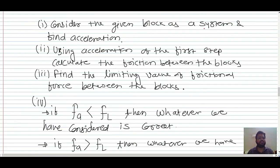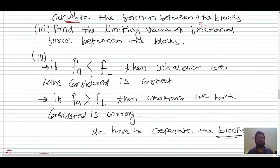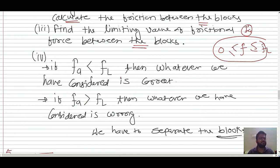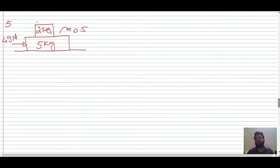For block-on-block systems, follow these steps: First, consider all blocks as a single system and find the acceleration. Second, calculate the friction force using that acceleration. Third, find the limiting value of frictional force between the blocks. If the calculated friction exceeds the limiting value, the blocks move separately; if it is within the limit, they move together.